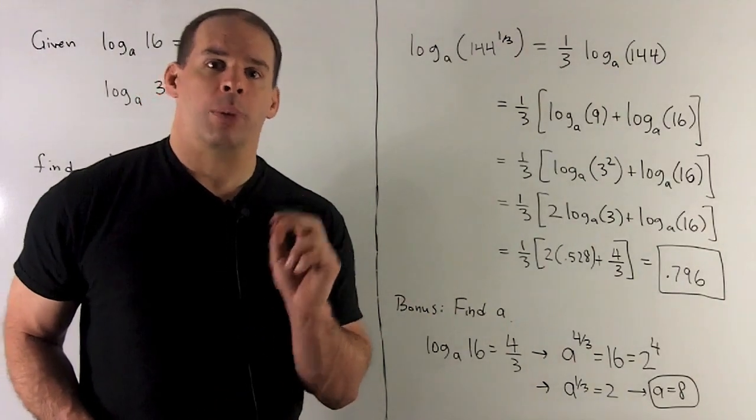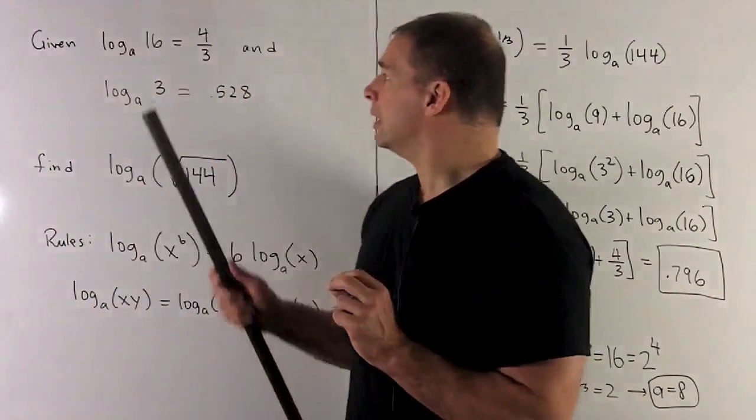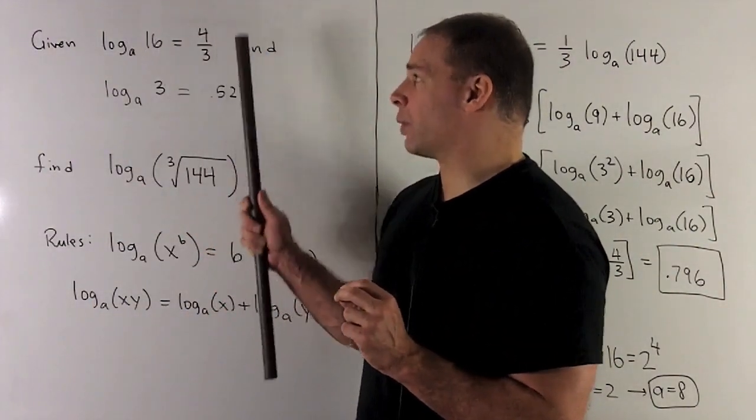Okay, bonus round, find A. So, I have my expression, log to the base A of 16 equals 4 3rds.